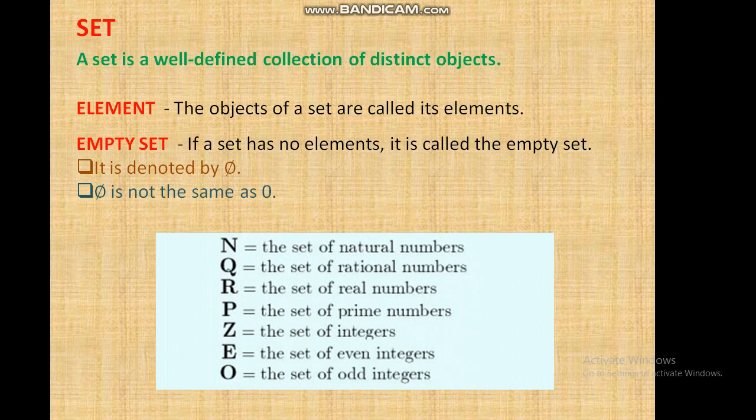Empty set: If a set has no elements, it is called the empty set. The empty set is denoted by φ (phi). φ is not the same as 0. N is the set of all natural numbers.